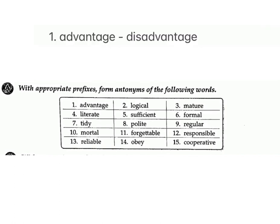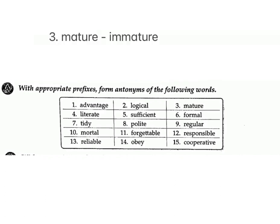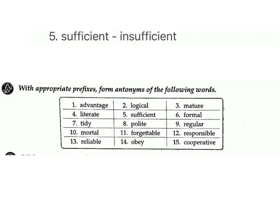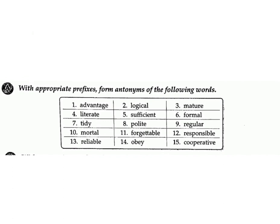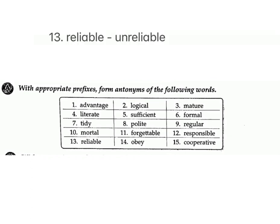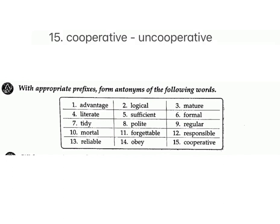1. advantage – disadvantage; 2. logical – illogical; 3. mature – immature; 4. literate – illiterate; 5. sufficient – insufficient; 6. formal – informal; 7. tidy – untidy; 8. polite – impolite; 9. regular – irregular; 10. mortal – immortal; 11. forgettable – unforgettable; 12. responsible – irresponsible; 13. reliable – unreliable; 14. obey – disobey; 15. cooperative – uncooperative.